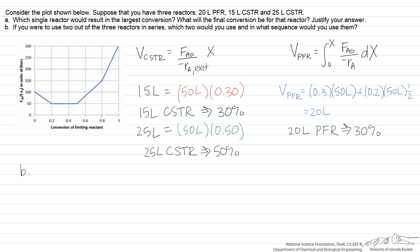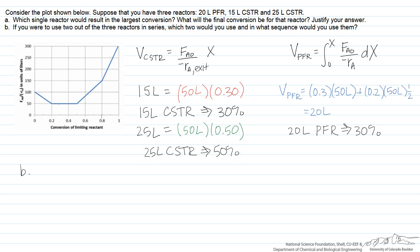In Part B of the problem, we are asked: if you were to use two of the three reactors in series, which two would you use and in which sequence? We've already seen that between the two CSTRs, it probably makes sense to use the 25-liter CSTR since it's larger and allows us to achieve a higher conversion — all the way to 50%.